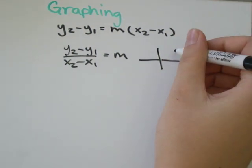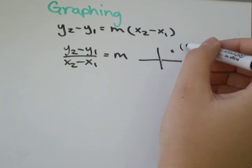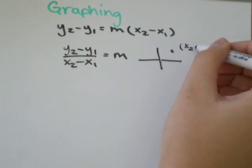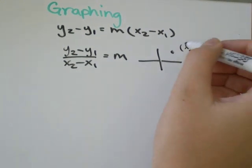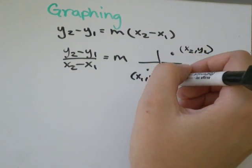if you had two points, let's say you had a point here that is x2, y2, and you had a point over here that's x1, y1.